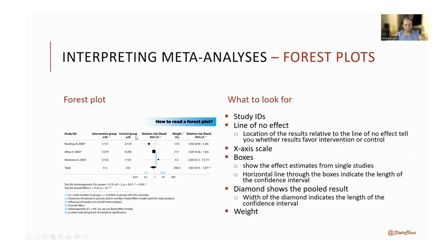You have the intervention group and the control group. The small n is the number of people in the intervention group who have the outcome of interest, and the big N is the total number of people in the intervention group — same for the control group. For example, if the outcome is anemia at the end of an intervention, in the intervention group one out of 131 people had that outcome, and in the control group it was two out of 133 people.